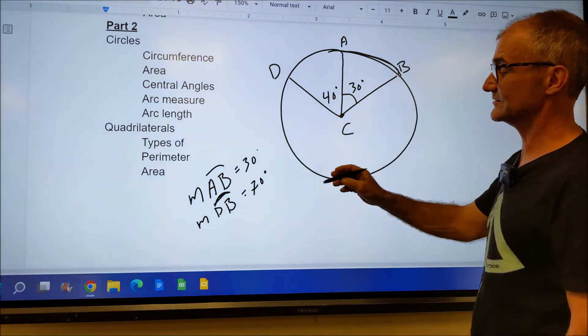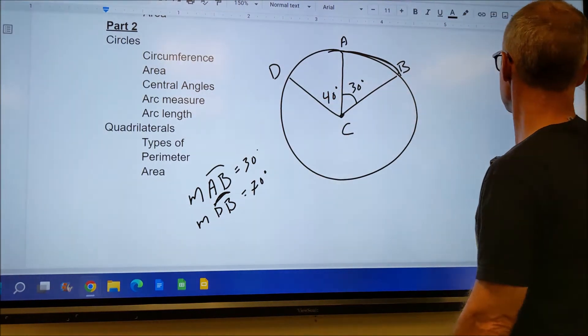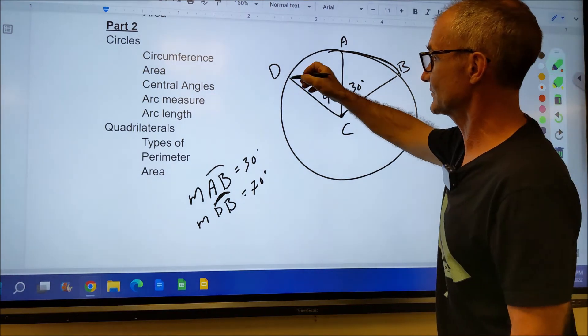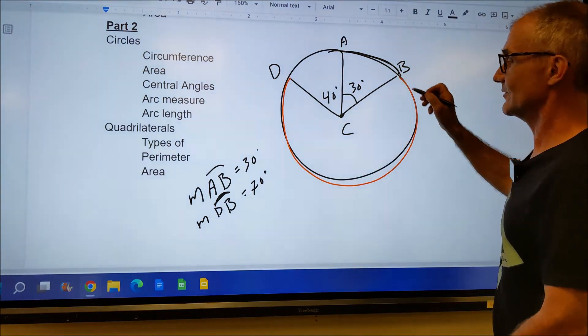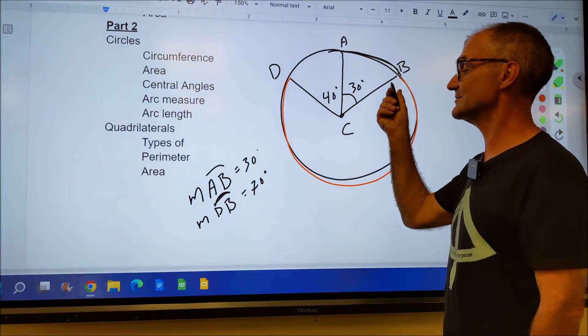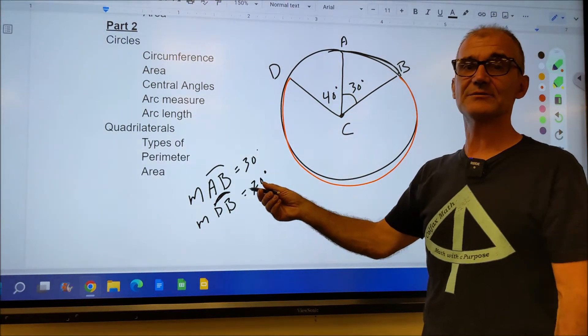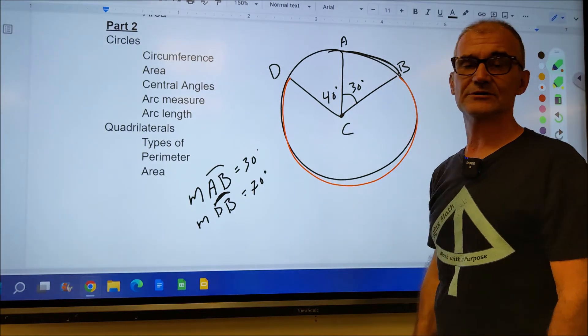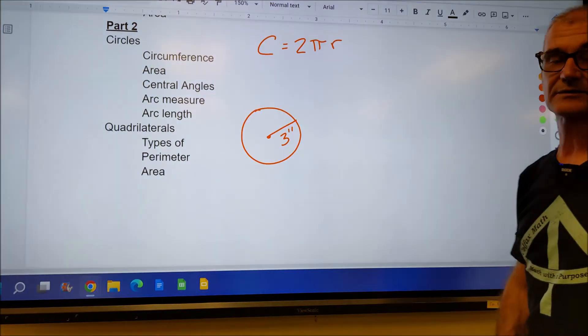That's the minor arc. I could also talk about the major arc, and the major arc would go around this way. I know all the way around is 360. So the major arc would be 360 minus 70, or 290 degrees.